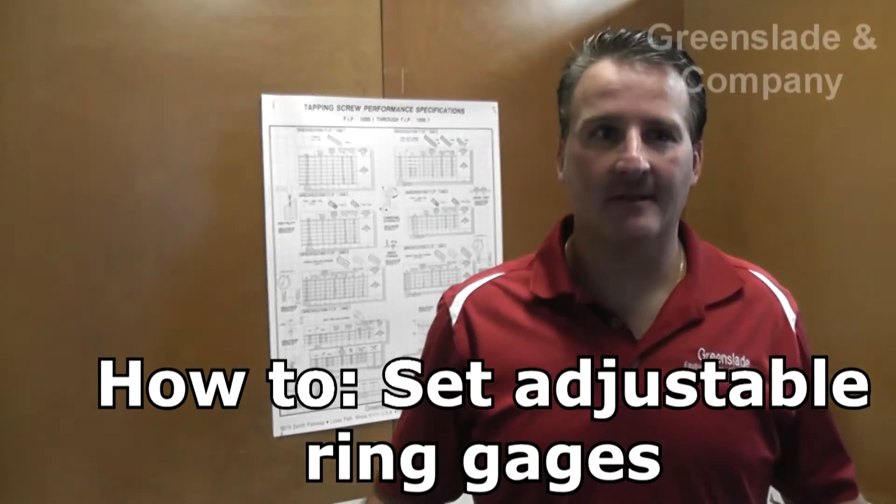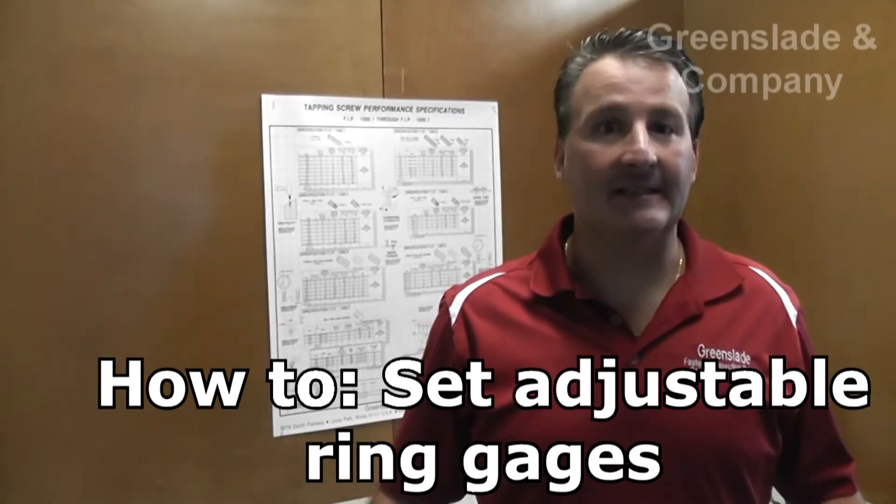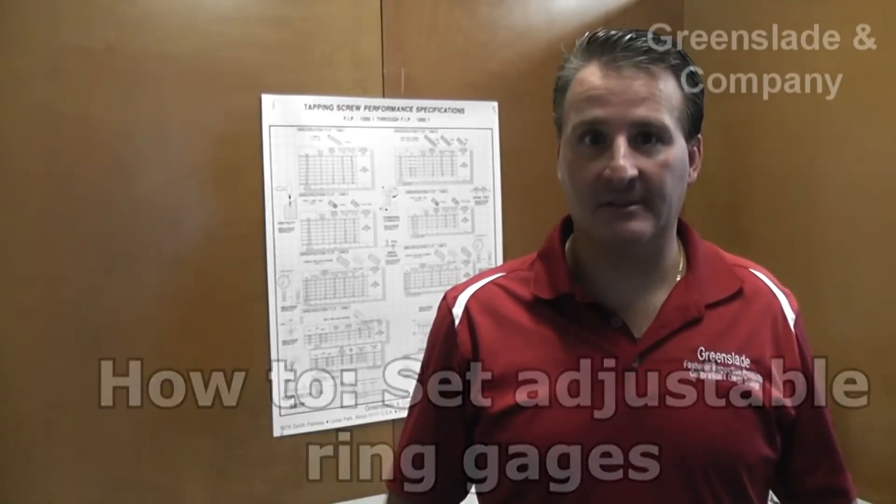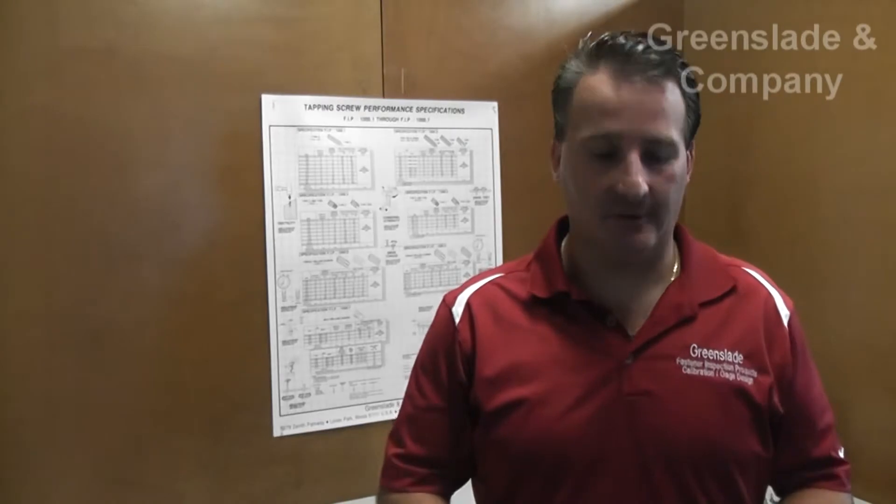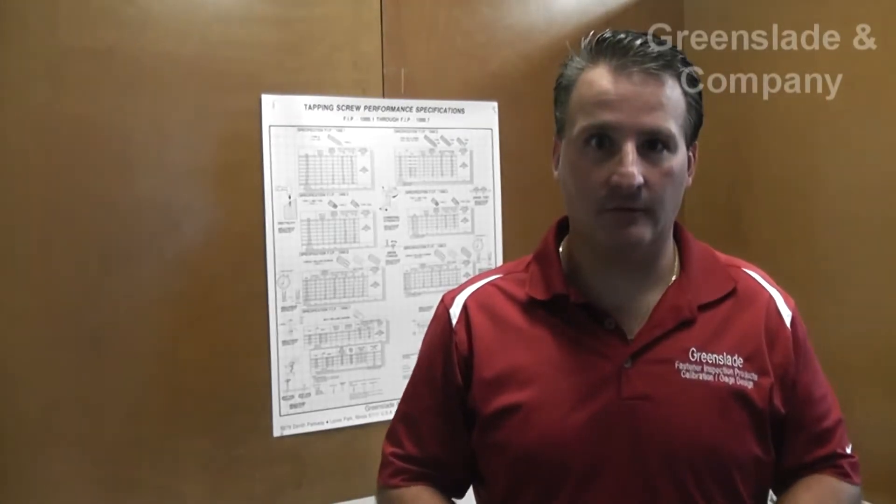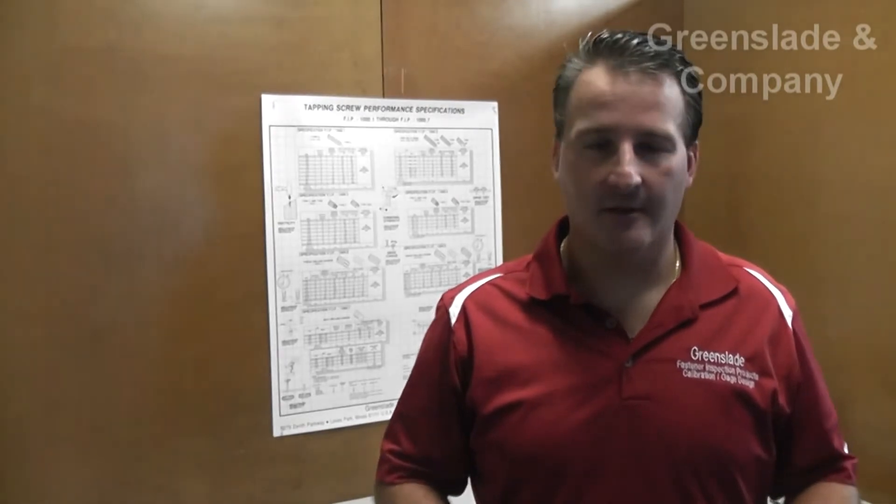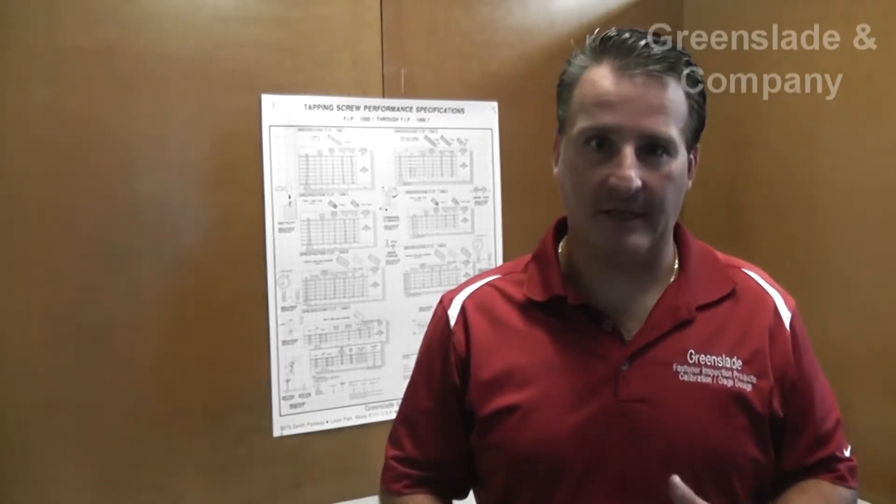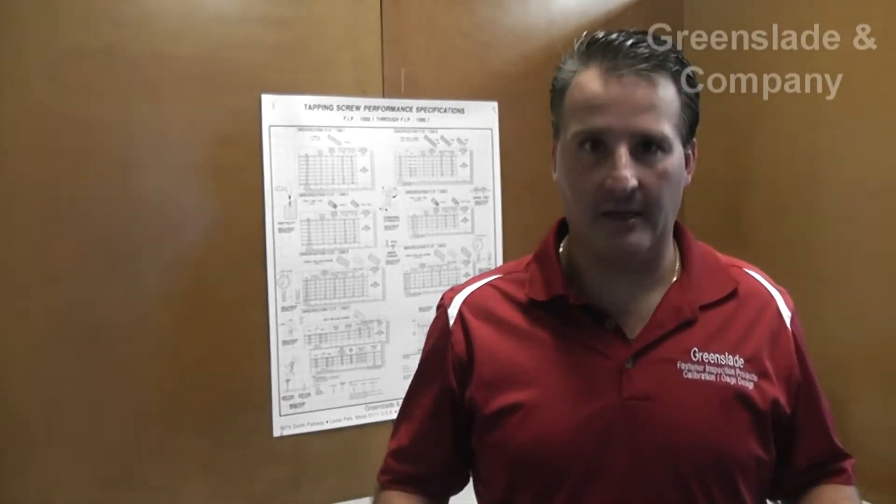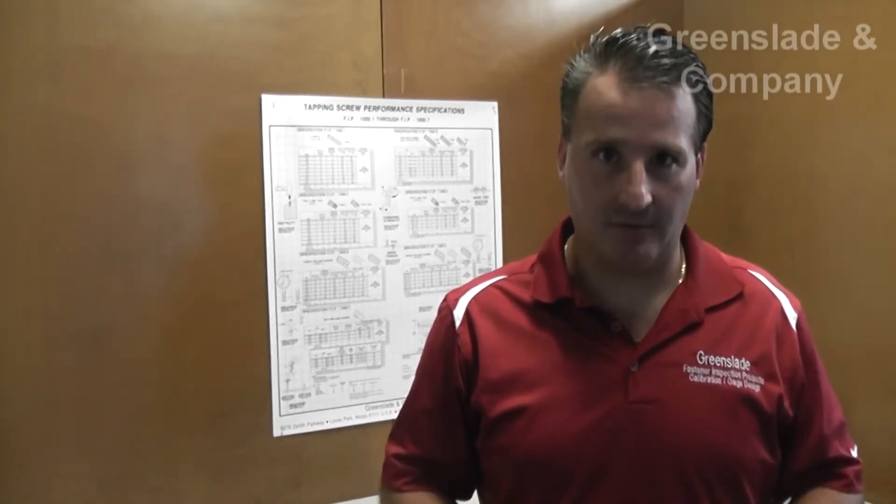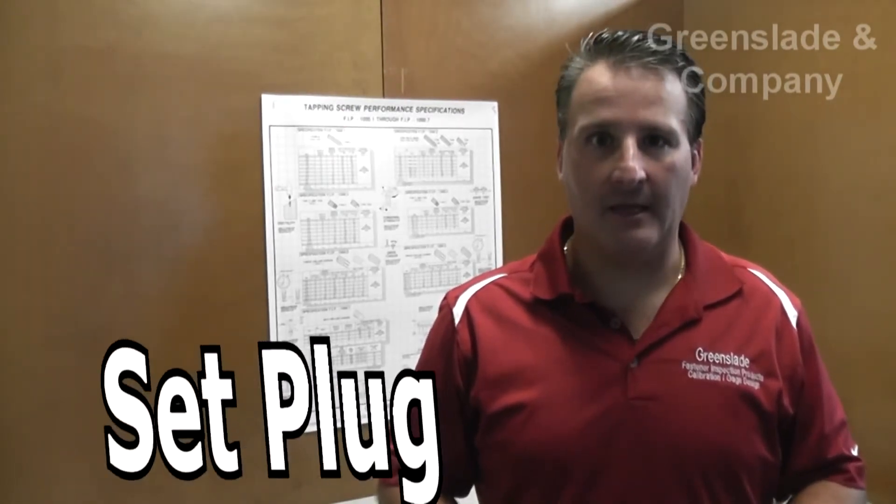There's lots of different methodologies and ideas out there about how they're supposed to be set, but if you read the standards—ASME B1.2, ASME B1.16, IFI standards, H28 standards—they all agree that the only way to set an adjustable thread ring is by a set plug.